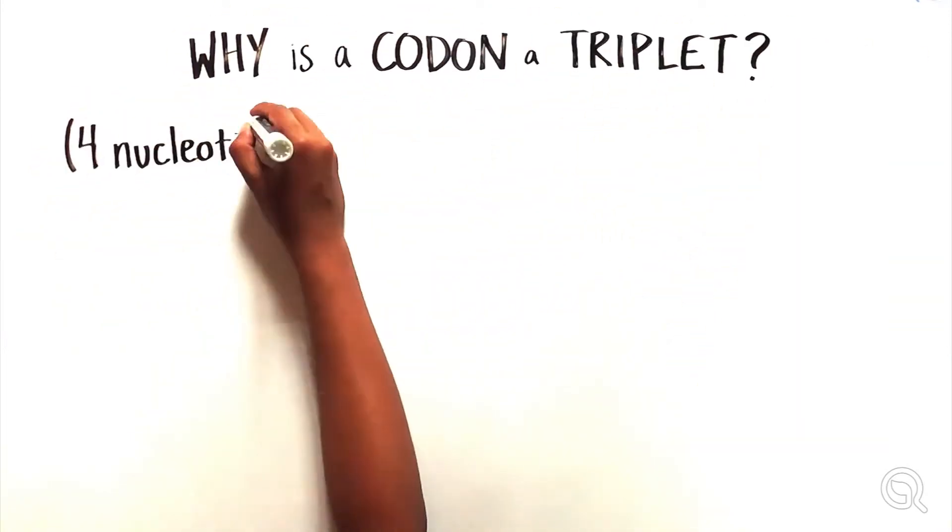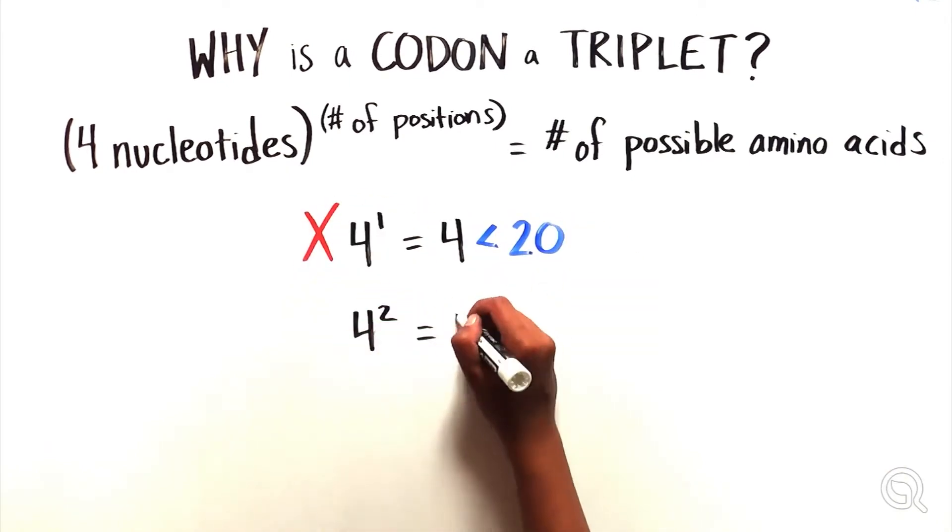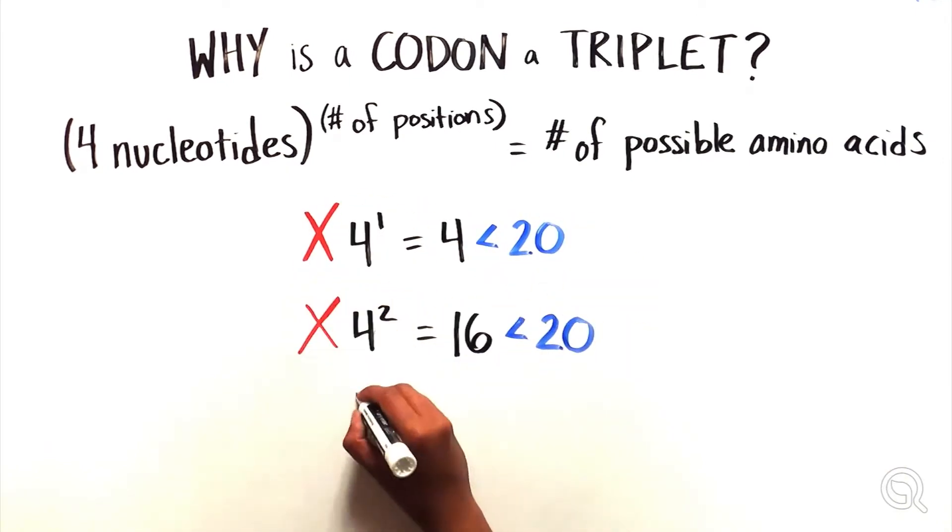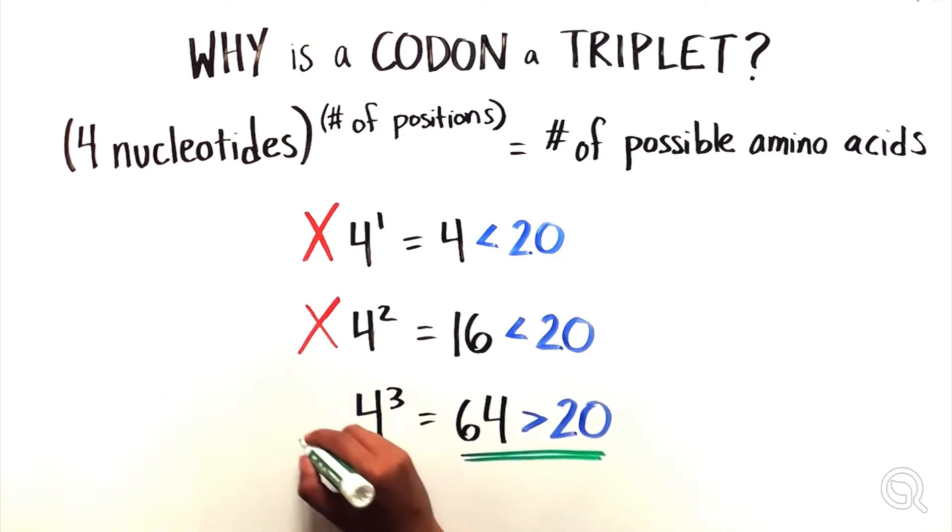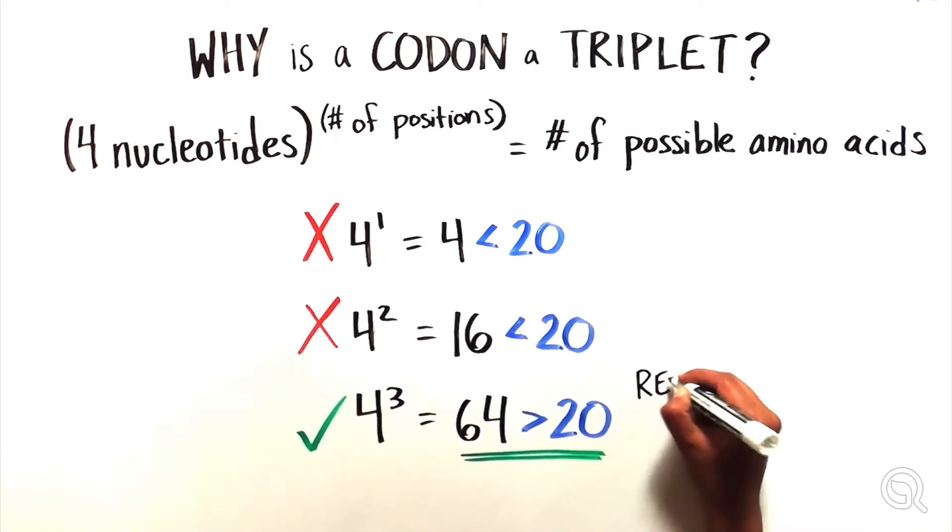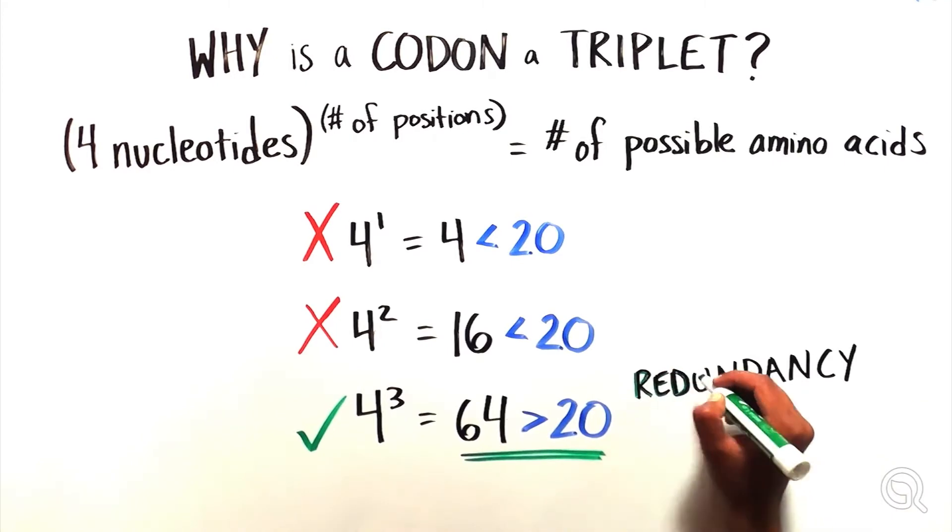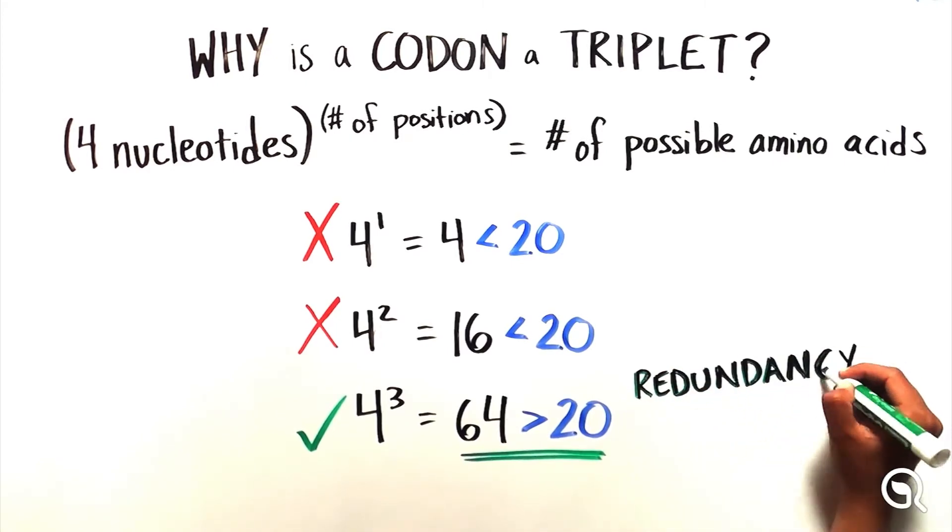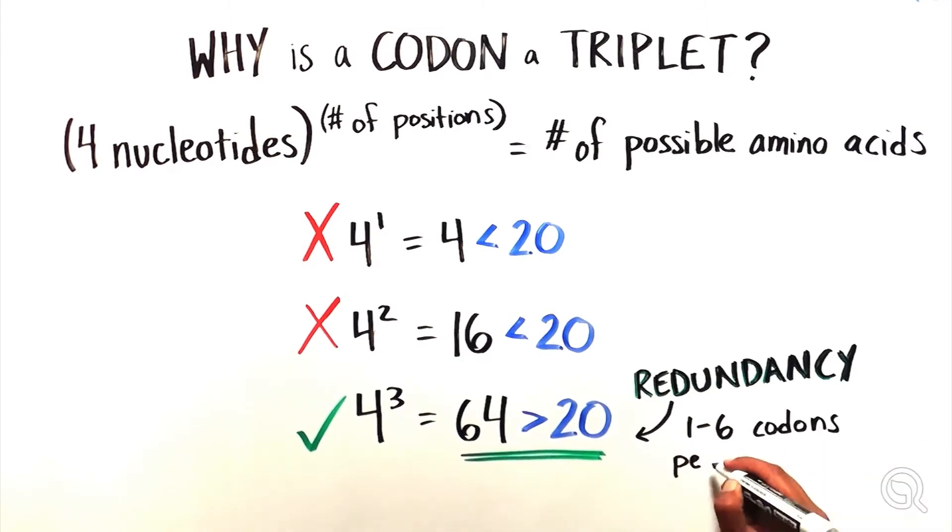A triplet makes mathematical sense because it's the smallest number of bases that can produce enough possible combinations, or 64 to be exact, to code for all 20 amino acids, as well as codons that signal for translation to stop. As 64 codons more than covers the 20 amino acids, the redundancy in the genetic code means that anywhere from 1 to 6 codons will encode for a specific amino acid.